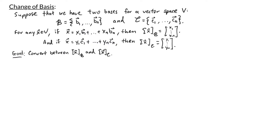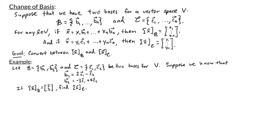Let's start by looking at an example. We have two bases for vector space V: b with vectors b1, b2 and c with vectors c1, c2. Suppose we know that b1 can be written as 2c1 minus c2, and b2 can be written as negative 3c1 plus 4c2. If the b-coordinate vector for x is (5, 3), what is the c-coordinate for x? Since the b-coordinate for x is (5, 3), x can be written as 5 times b1 plus 3 times b2.